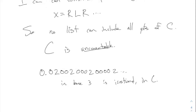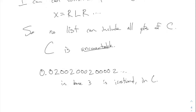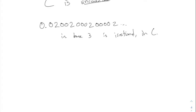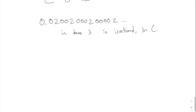These base-three digits are sometimes called ternary digits. So: C is closed and C is uncountable. My last fact for today is that C is not open.